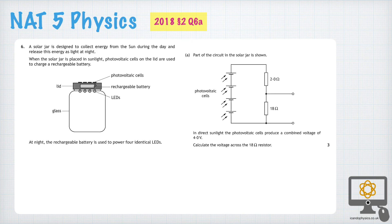Question 6A from the 2018 National Farm Physics paper is a fairly straightforward potential divider question. The idea here is that we have a rechargeable battery which is powered by photovoltaic cells and the sunlight is producing a combined voltage of 4 volts.